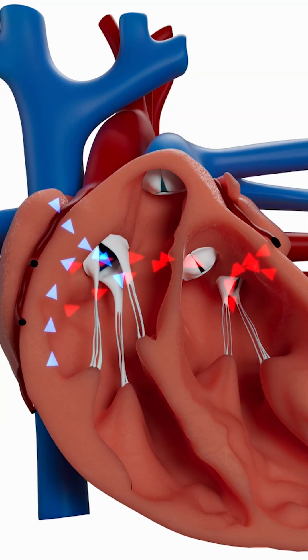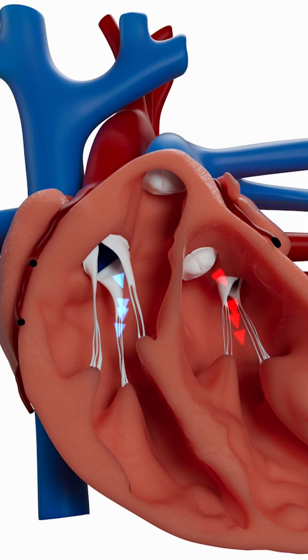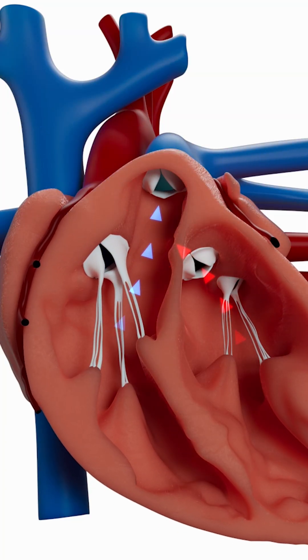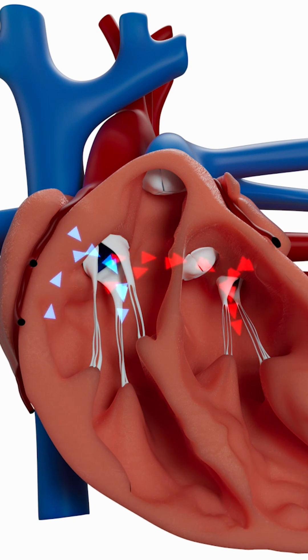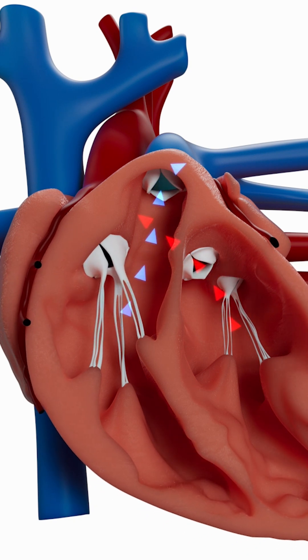The heart has four chambers and four heart valves that control the flow of blood into those chambers, in between those chambers, and out of the heart. These valves over time can either get stenotic — which means they get tight — or they can get leaky, called regurgitation or incompetence.